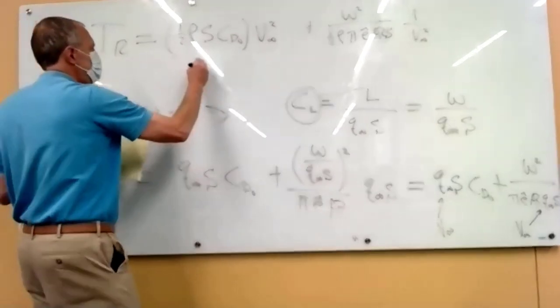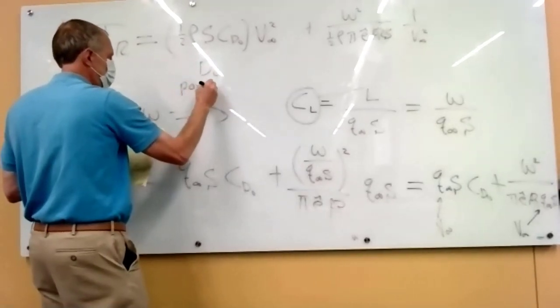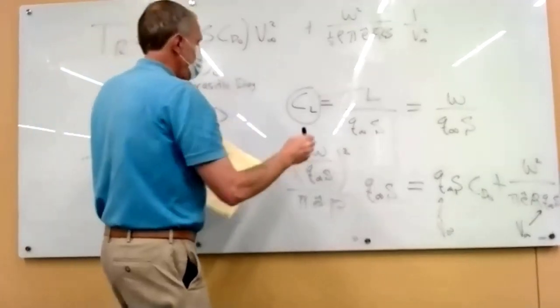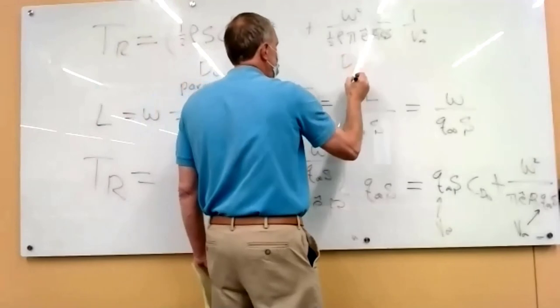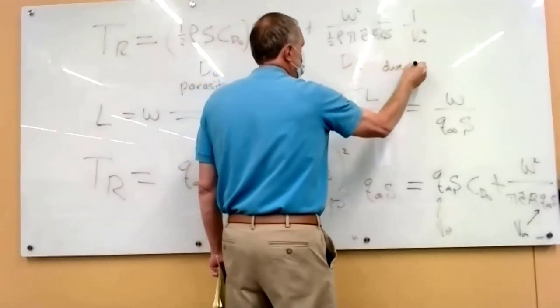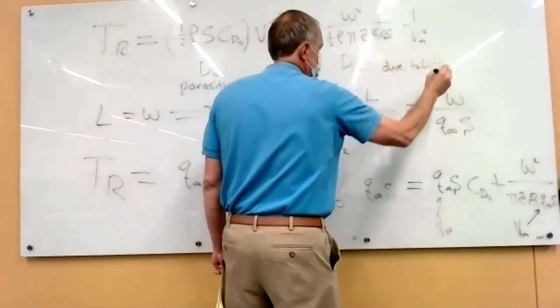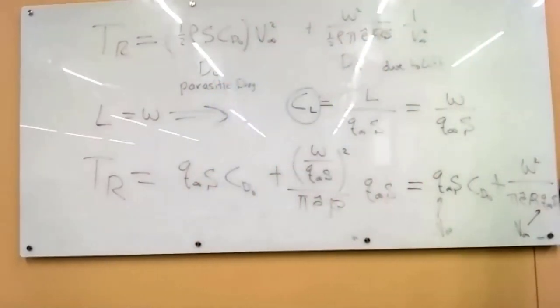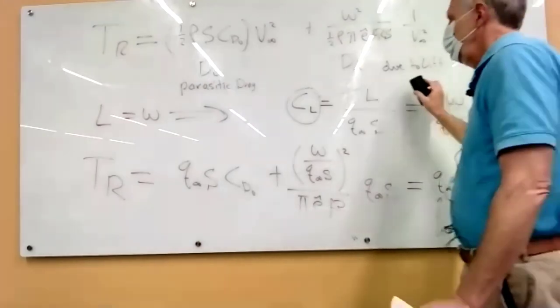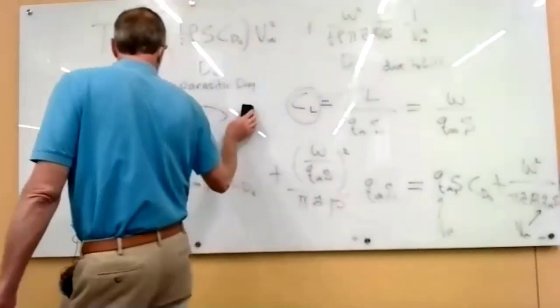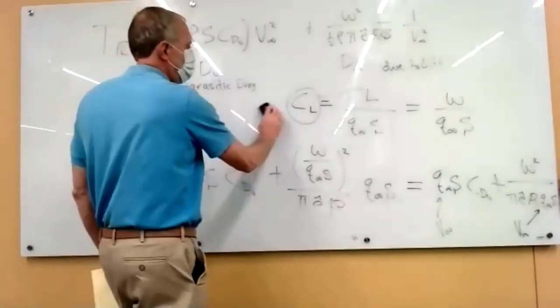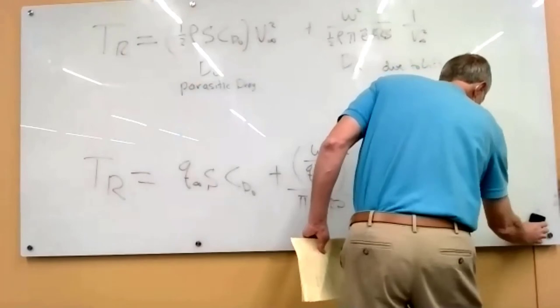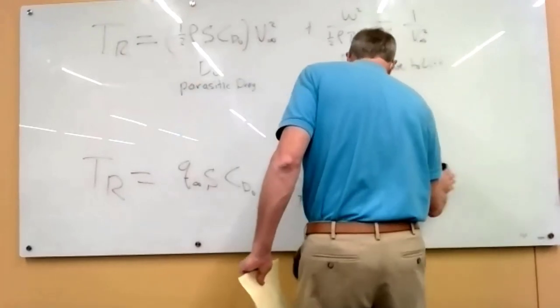This is the parasitic drag, and this is the induced drag due to lift, just like for the finite wing, but now we're talking about the whole airplane. So now let's go back to the original idea of how does changing the velocity change the total drag and the total thrust.